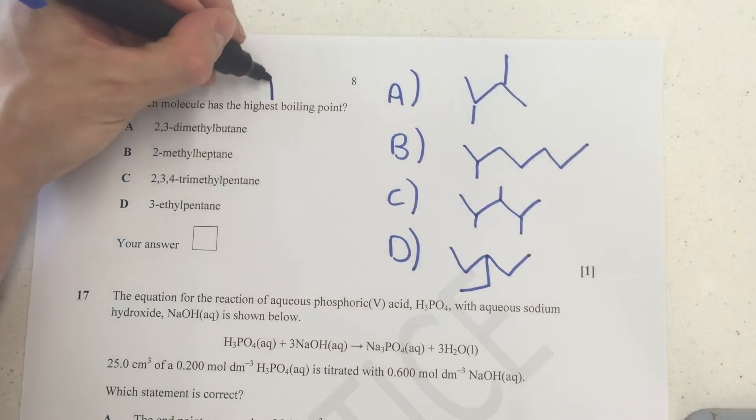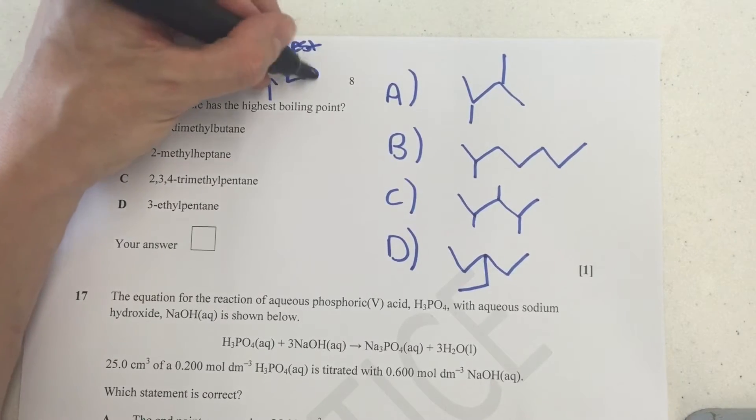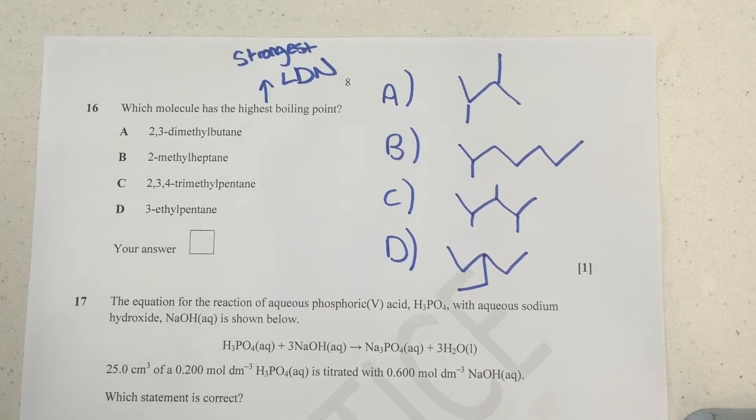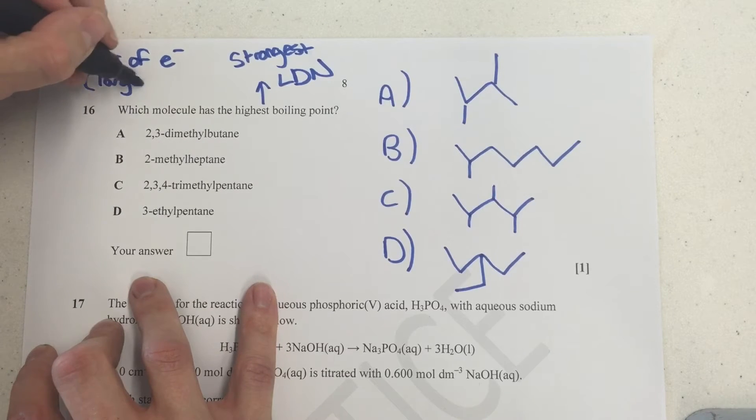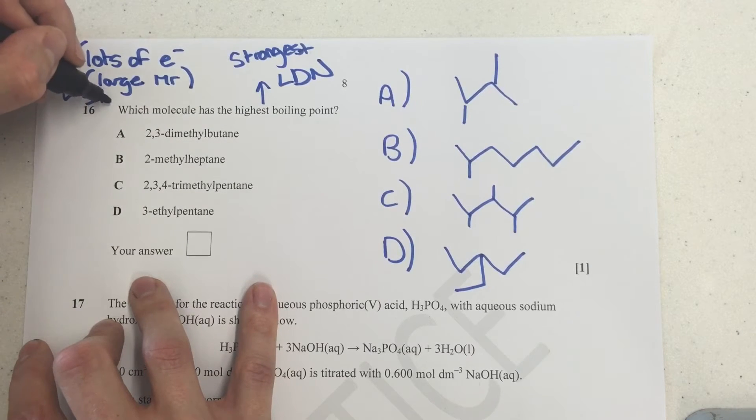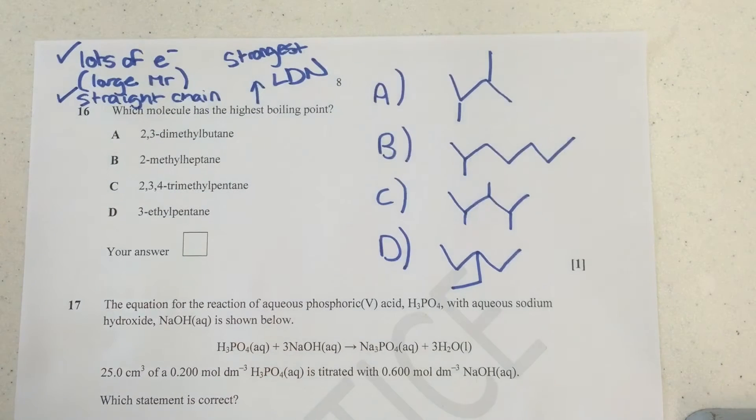So this one is going to be highest boiling point, which has got the strongest London intermolecular forces. Because that's what happens between alkanes. We have London forces. Remember, these used to be called van der Waals in the old mark schemes. But London forces is all that happens. Now in order to get stronger London forces, what you need is lots of electrons, which is kind of observed by seeing a large Mr value, a large molar mass value for the molecule. And you also need a straight chain, or as much straight chain as possible. Limit the branches. Fewer branches. So if you want a high boiling point, something where that's difficult to boil, you need to make sure that you've got a big Mr and you've got a straight chain.